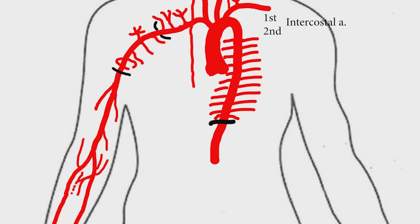The first and second intercostal arteries arise from the superior intercostal artery, which is a branch of the costocervical trunk of the subclavian artery.